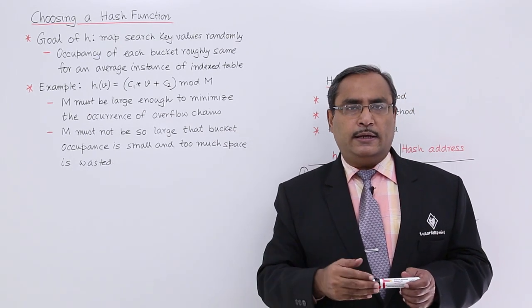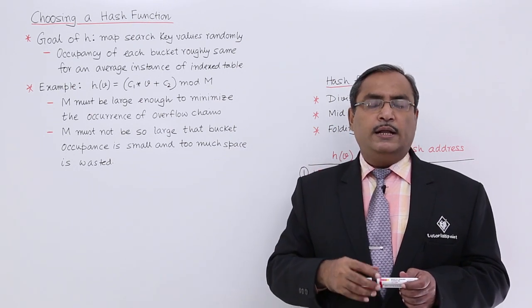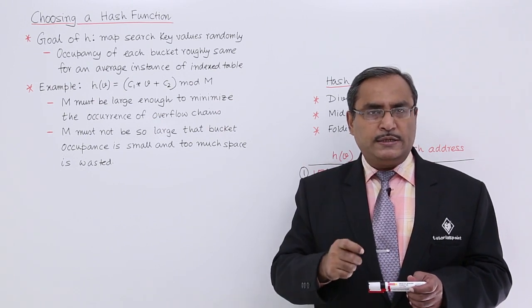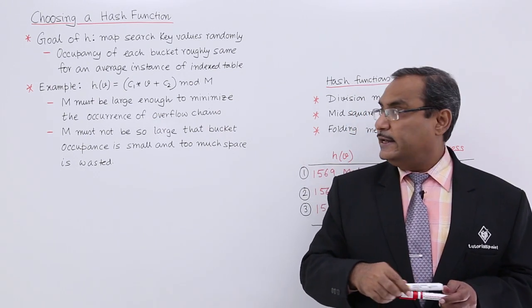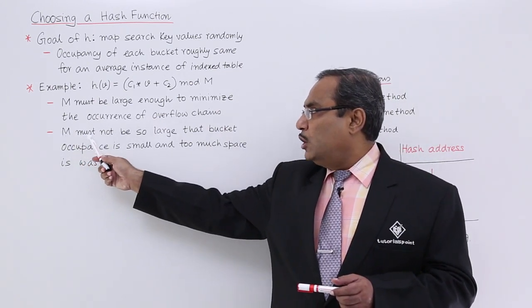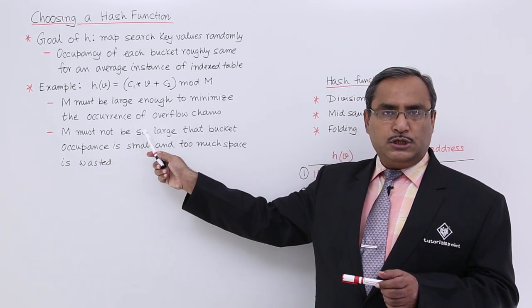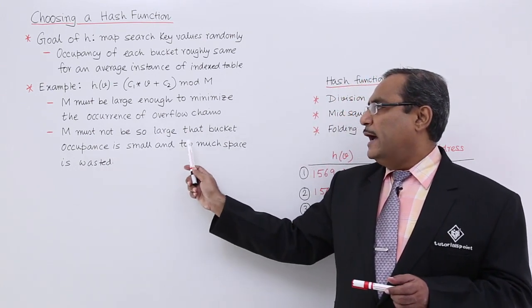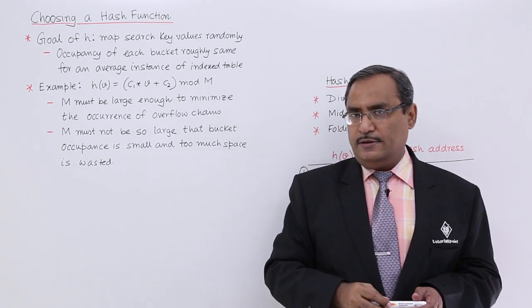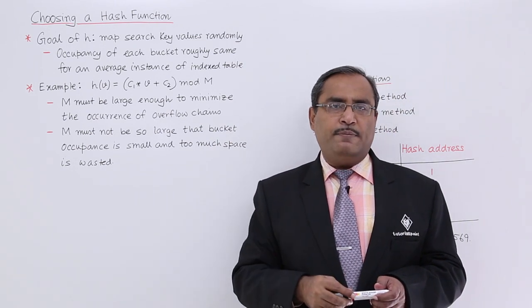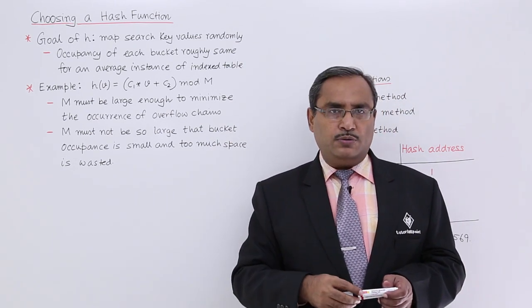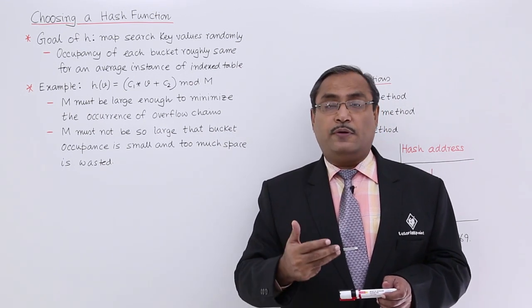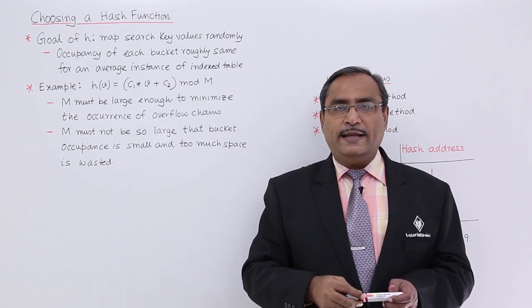We know that whenever the overflow chains are there, obviously the searching cost will be enhanced, the searching complexity will be increased in that case. But m must not be so large that the bucket occupancy is small and too much space is getting wasted. That means I should not select m to a very large value